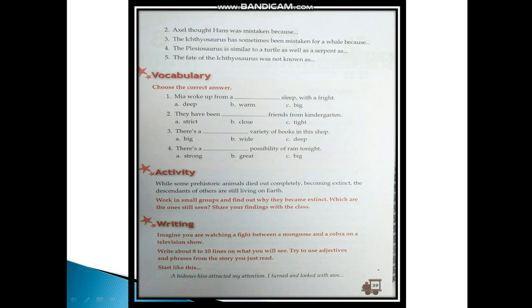And then you have this writing part. Imagine you are watching a fight between a mongoose and a cobra. What is mongoose? A nevla. And you know cobra? A snake. So when you will see a snake and a mongoose, you will probably see a fight. Maybe in movies or maybe in National Geographic channel or Discovery channel. So maybe on a television show. Write about 8 to 10 lines on what you will see. Try to use adjectives and phrases from the story you just read. So you have to write a story on your own. And it must start like this. A hideous hiss attracted my attention. I turned and looked with awe. And then you will write a whole story in about 8 to 10 lines.